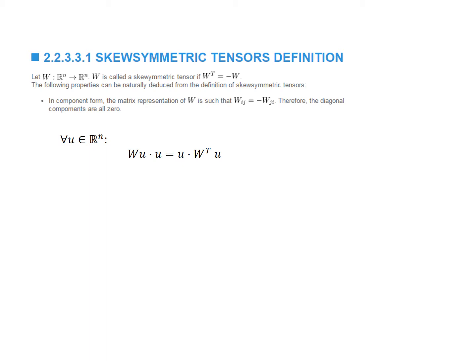This also implies a very interesting result. Let's pick a general vector u and apply W to u, then take the dot product of u and Wu. From the properties of the transpose, u dot Wu is equal to u dot W transpose u. Since W is skew-symmetric, we can replace W transpose u with negative Wu. So we end up with Wu dot u is equal to negative u dot Wu, and since the dot product is linear, Wu dot u equals negative Wu dot u.